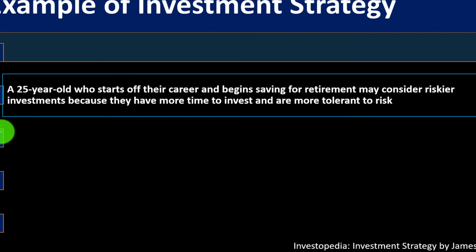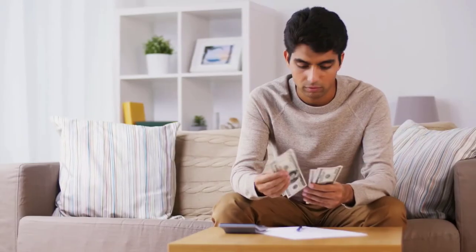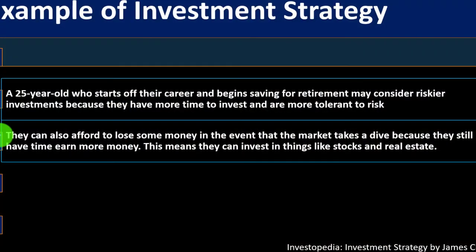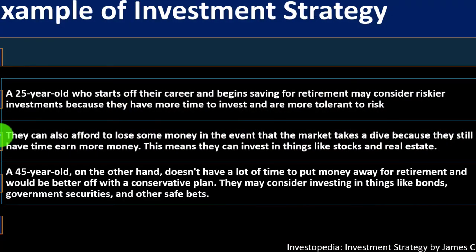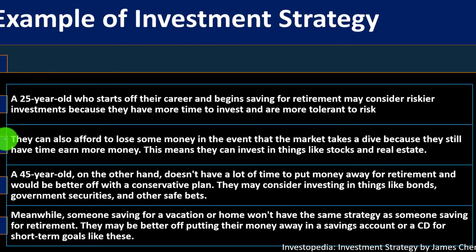For example: a 25-year-old who starts their career and begins saving for retirement may consider riskier investments because they have more time to invest and more tolerance for risk. They can afford to lose some money if the market dips, because they still have time to earn more. This means they can invest in things like stocks and real estate. A 45-year-old, on the other hand, doesn't have as much time and would be better off with a conservative plan — investing in things like bonds and government securities. Meanwhile, someone saving for a vacation or home won't have the same strategy as someone saving for retirement — they may be better off putting money in a savings account or CD for those short-term goals.